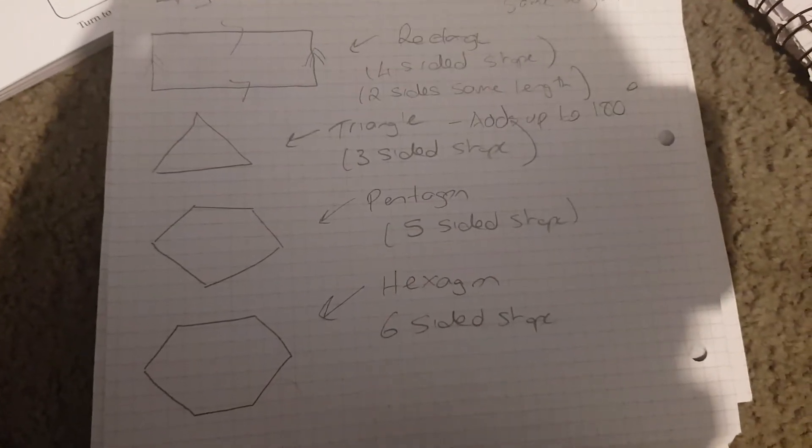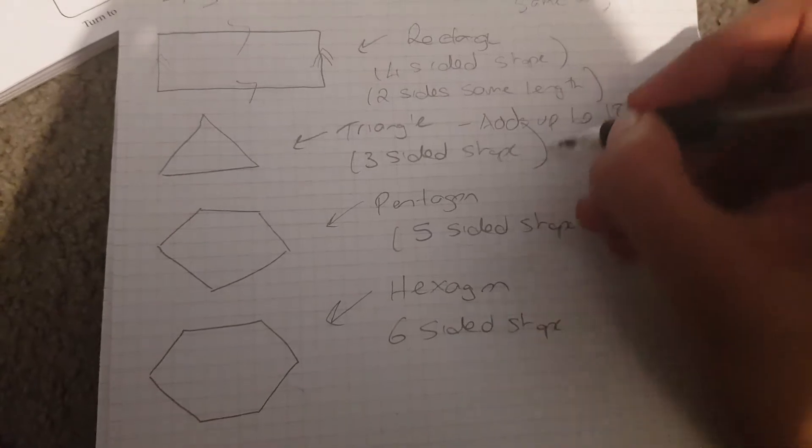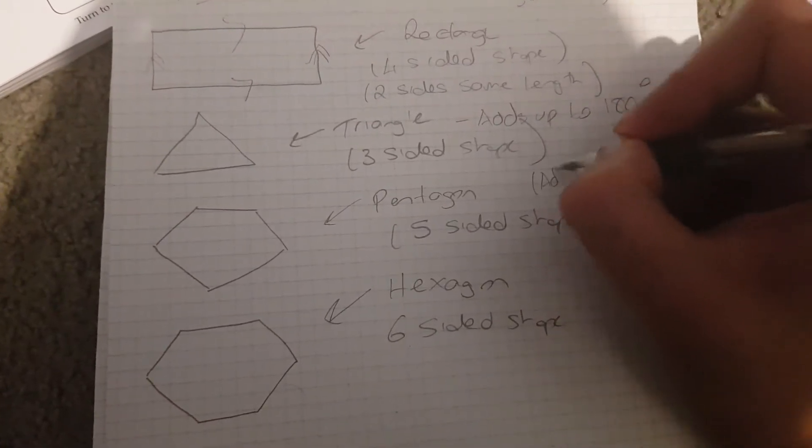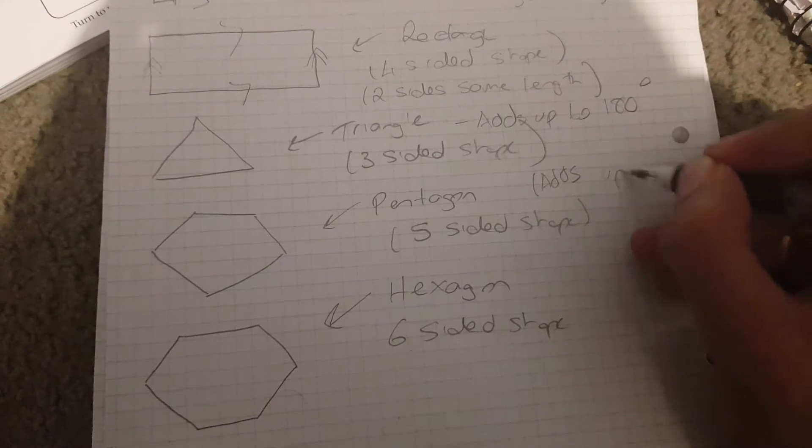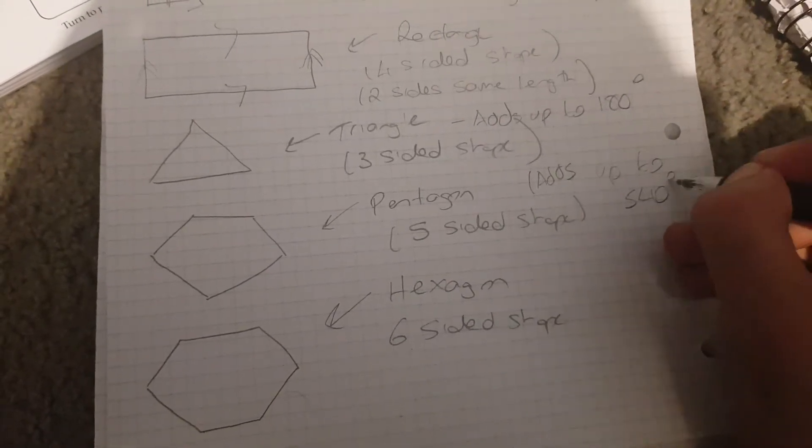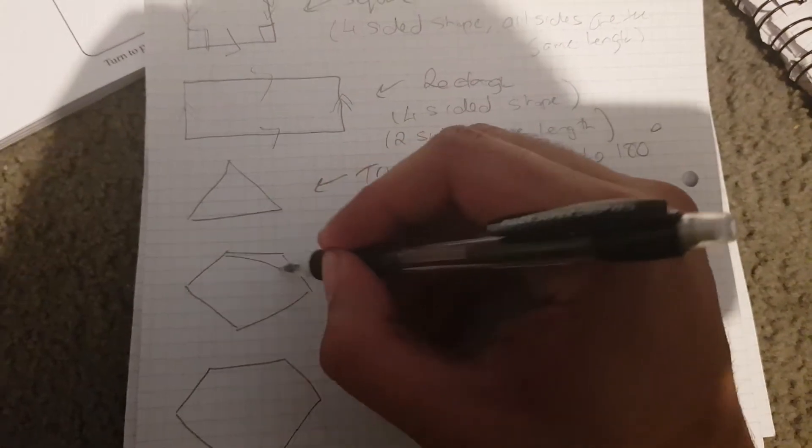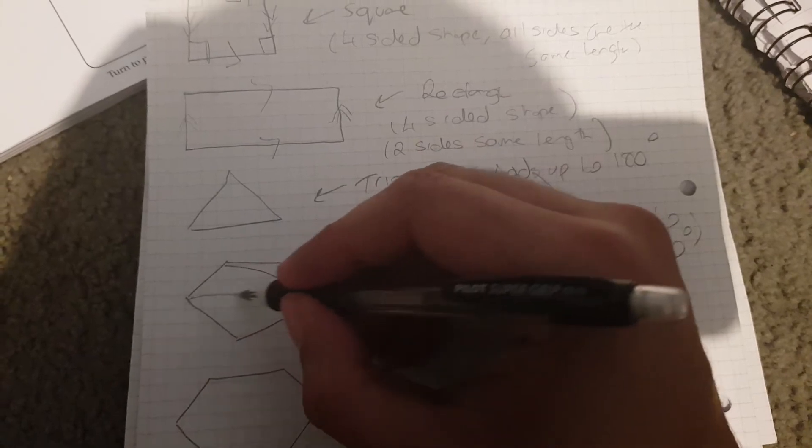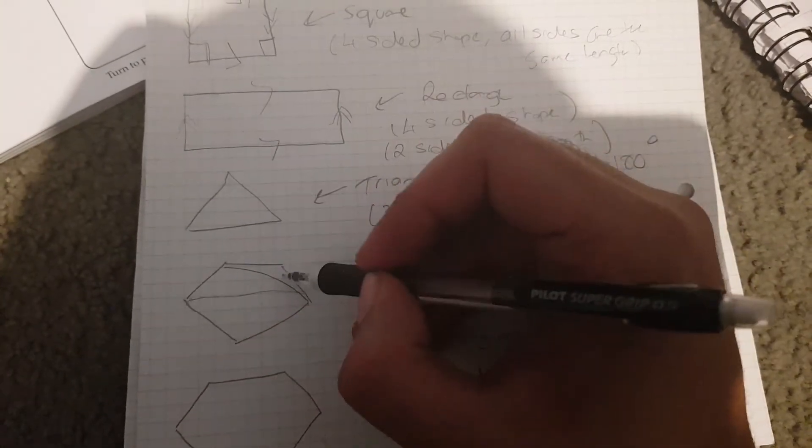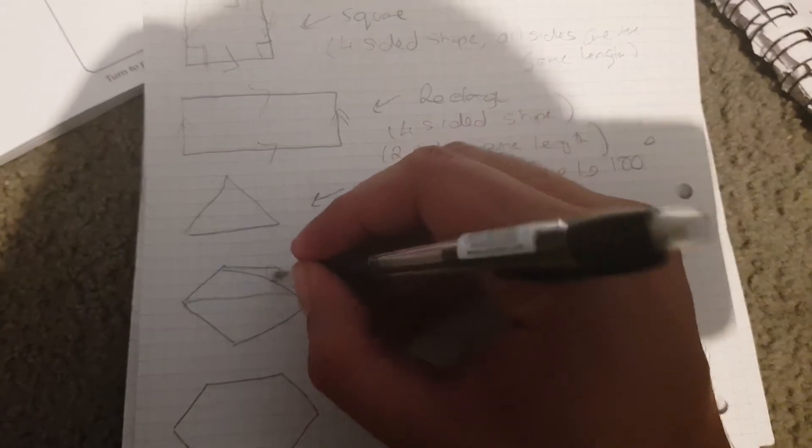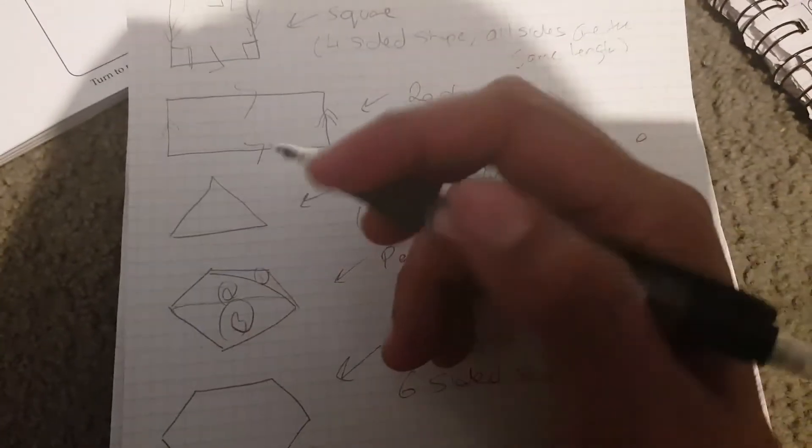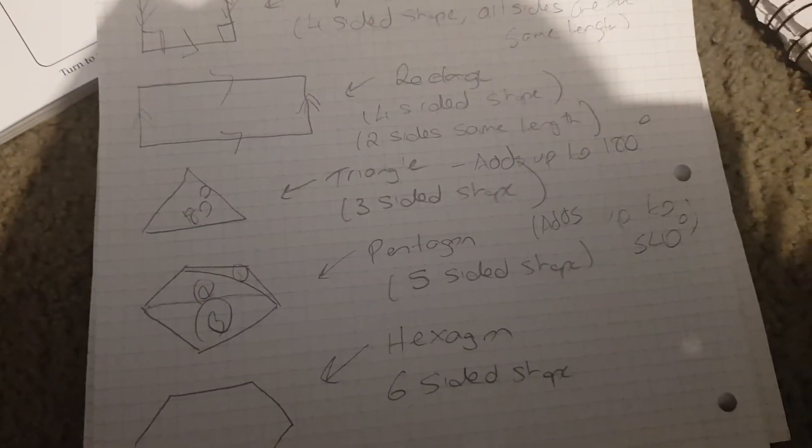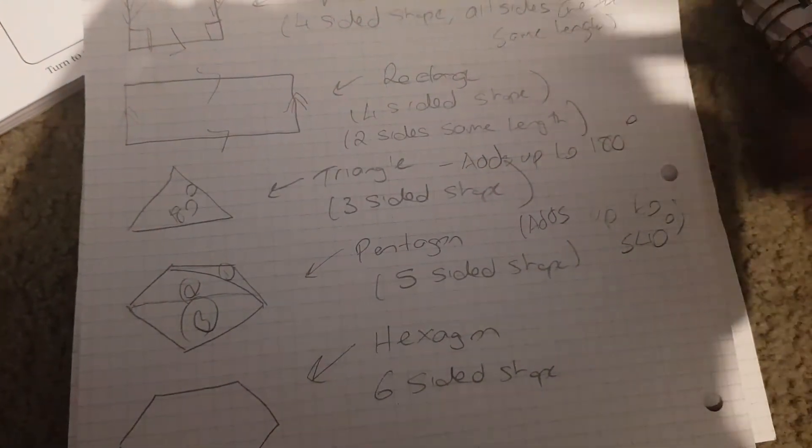That's a pentagon. It's just a five-sided shape. Pentagon adds up to 540, and that just comes from, because if I was to split this into triangles. I've got one triangle, two triangles, three triangles. So I've got triangle there, triangle there, triangle there, and by definition, where this is 180 inside, it's 180 plus 180 plus 180, which gives me 540.